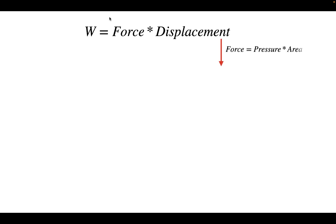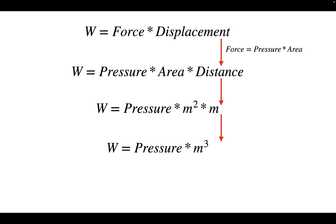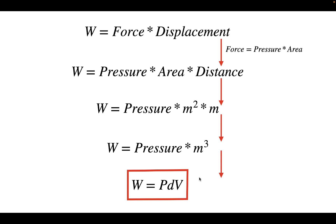We can rearrange the pressure equation to solve for force: force equals pressure times area. Substituting this into the work equation and converting area and distance to SI units, we get work equals pressure times meters squared times meters, which simplifies to work equals pressure times meters cubed. Therefore, pressure-volume work is equal to pressure times the change in volume — and this is the equation we'll use for the remainder of this video.